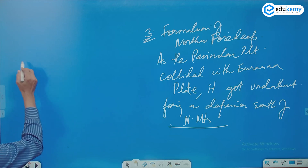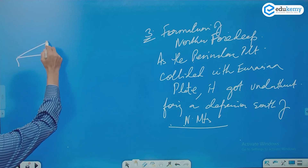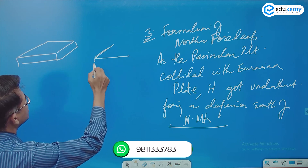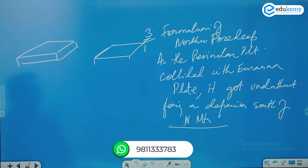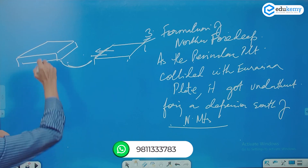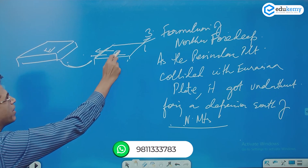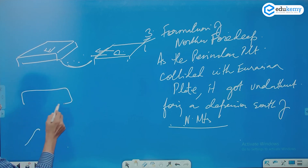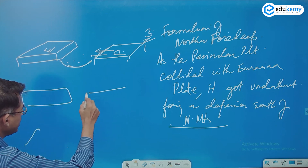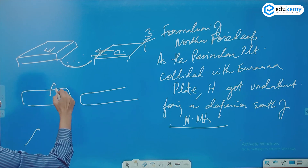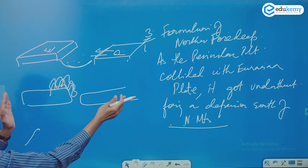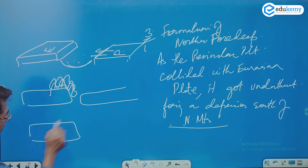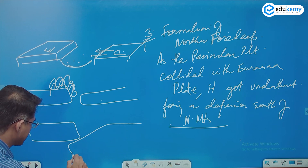Looking at this diagram: this is the Eurasian plate, and this is the Indian peninsula coming northwards. This is the Tethys Sea between them. As they collide, the mountains are forming here along the collision zone.